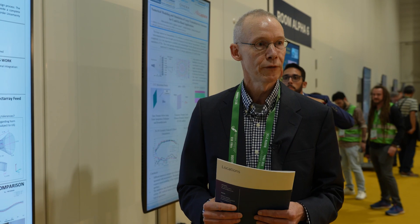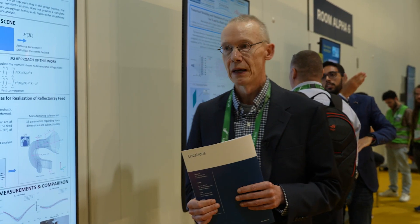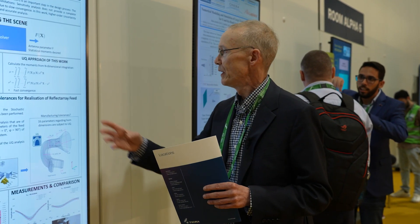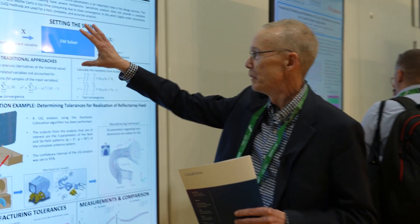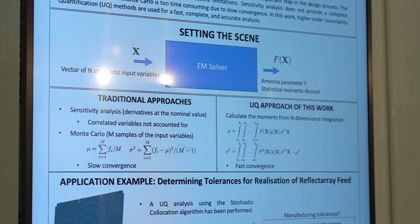Other people do so-called sensitivity analysis, which is simply the derivatives at the nominal values. There are many things — for instance, correlated variables — that you do not take into account with this technique. What we propose in our newest version of our TIGRTOOL software is a so-called higher-order uncertainty quantification analysis, where we can in a more accurate way calculate the desired moments. We have an input, some EM solver — our own solver in this case — and the output variable for which you want the moments.